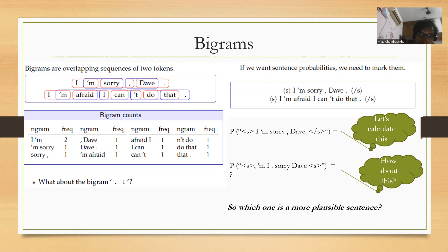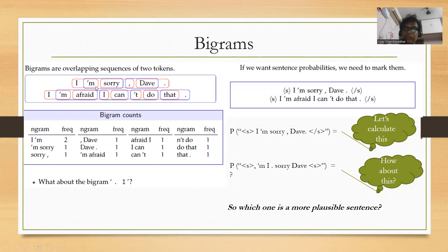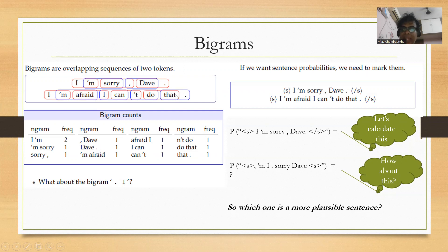Now we're going to deal with bigrams. What are bigrams? Sequences of two consecutive tokens. For example: 'I am,' 'I'm sorry,' 'sorry comma,' 'comma Dave,' 'Dave period,' 'I am,' 'I'm afraid,' 'afraid I,' 'I can,' 'can't,' 'do that,' 'that period.' You see bigrams and their counts.